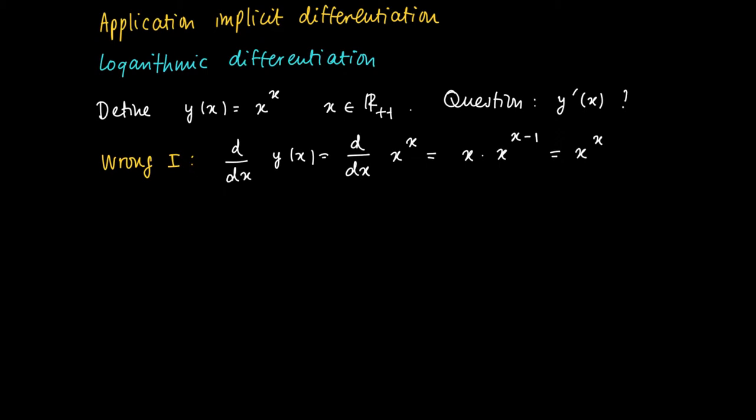But this is a wrong idea. And the reason why this is wrong is that we may take a derivative of a power function for fixed power n. But now the power is x which is variable. So x to the power n if we take a derivative equals n times x to the power n minus 1, but n is supposed to be fixed.